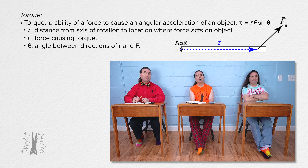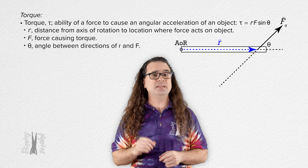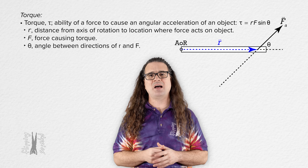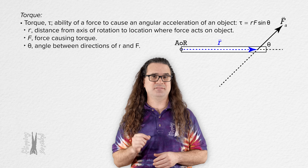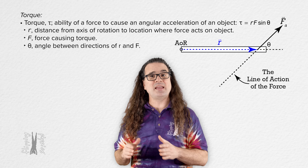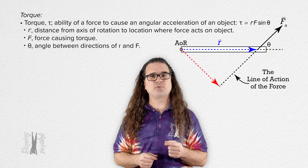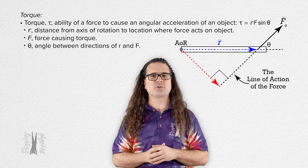That means theta, the angle between the direction of r — which is to the right — and the direction of the force applied, which is up and to the right, is between the force applied and a line drawn horizontally which extends the line for r to the right. We can add a dotted line which is parallel to the direction of the force applied and goes down and to the left. This is called the line of action of the force. And we can add another line which goes from the axis of rotation to the line of action of the force and is perpendicular to the line of action of the force.